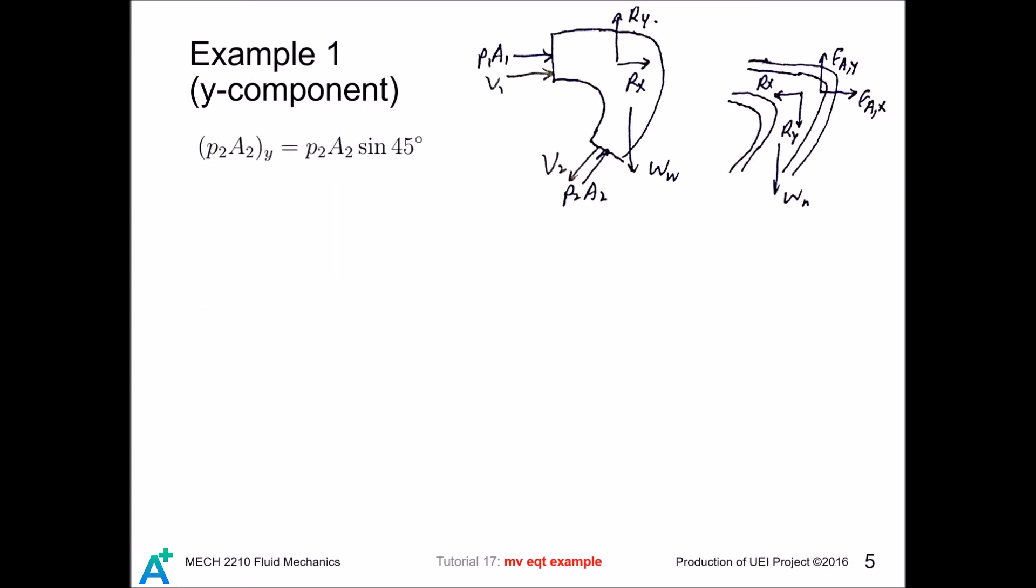And we repeat the procedure for the y component. For the y direction, we have the y component of this force, this force, and this downward force. By the y component of the linear momentum equation, we can use our shortcut for this. But there is no y component for the inlet velocity. Our outlet velocity points this way, and this is 45 degrees. But this y component points opposite to the y axis, so this is negative v2 sin 45.